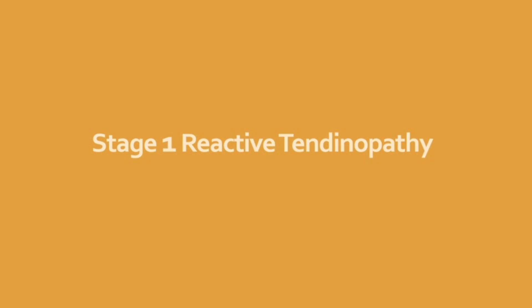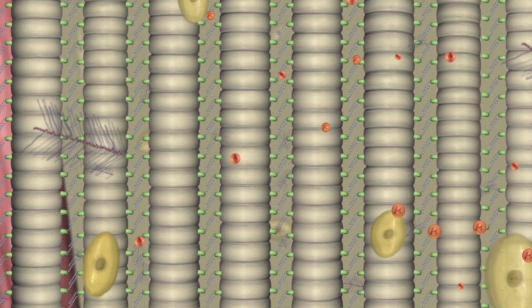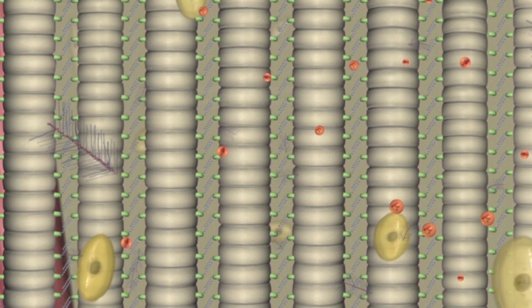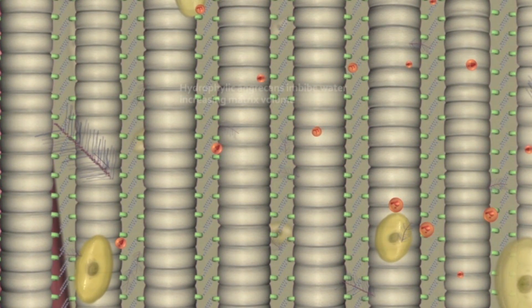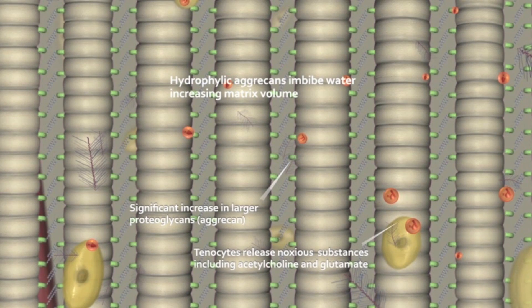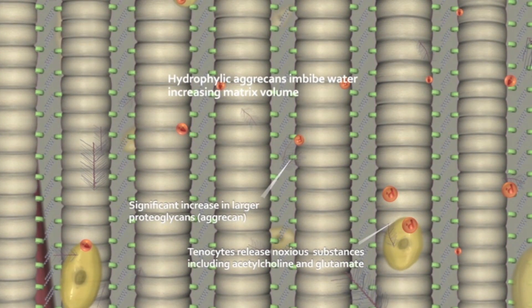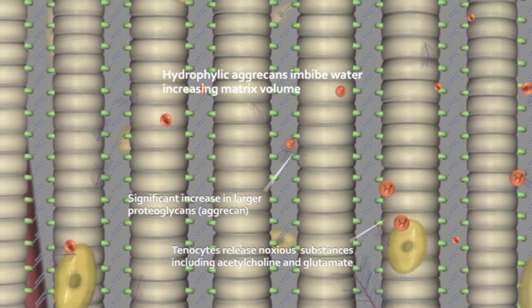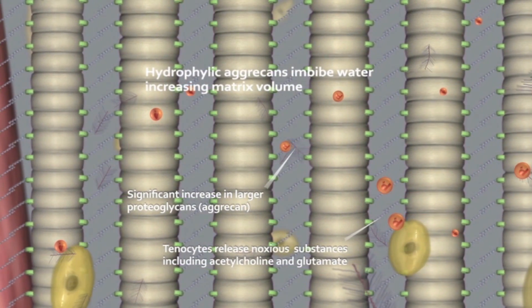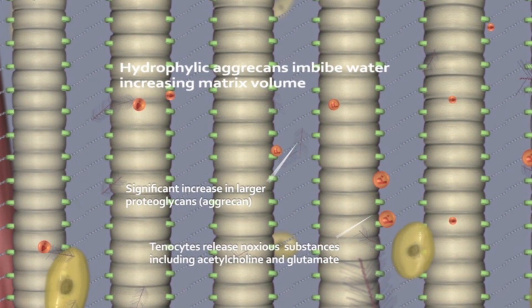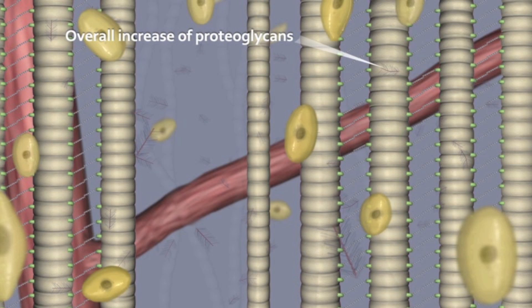The first stage of the tendinopathy continuum is referred to as reactive tendinopathy. The tenocytes are reported to change shape as a result of mechanotransduction. This increases their production of larger proteoglycans known as aggrecan — hydrophilic proteoglycans which imbibe water. The increased fluid content within the extracellular matrix is thought to be the reason why the collagen fibrils part and the tendon is seen to thicken in symptomatic patients.